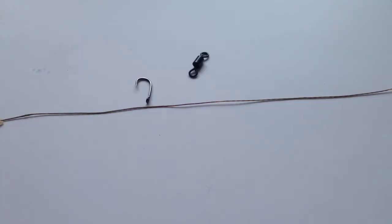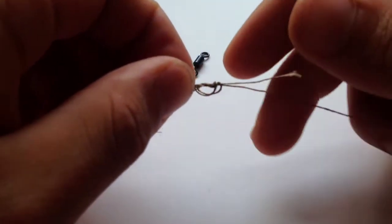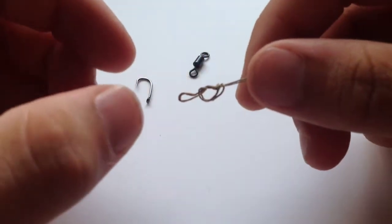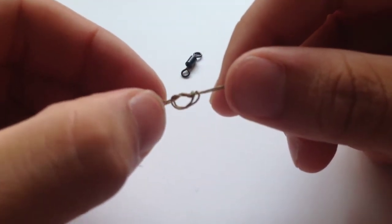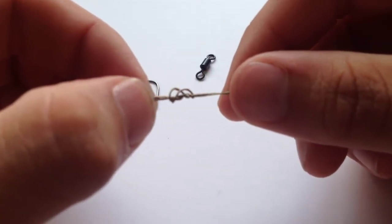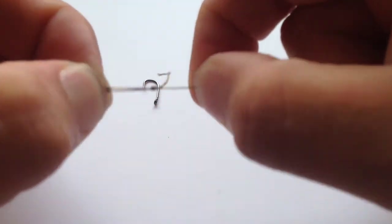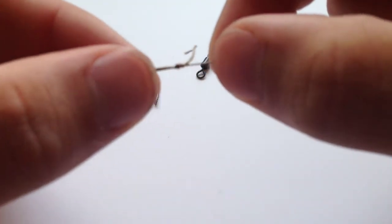Let's get started on how to tie the rig. You're going to want to start with a length of braid. I've cut this just over a foot long. Start by tying a simple overhand knot in the end of your hook link and pull that tight. This creates the hair coming out of the back of the hook.